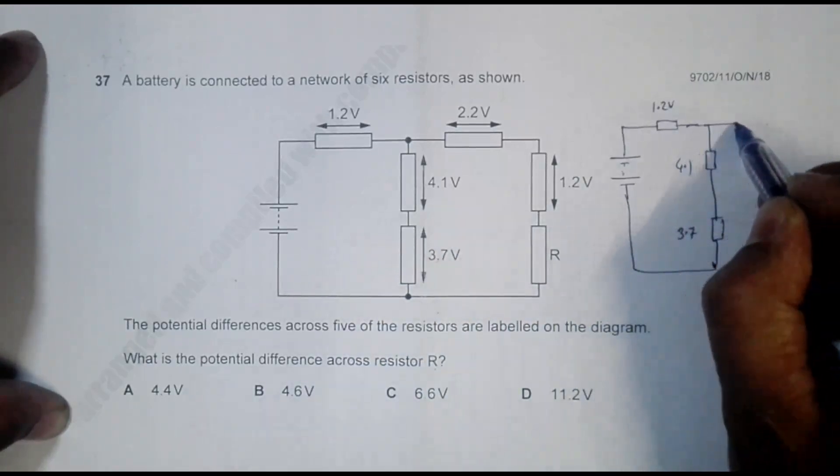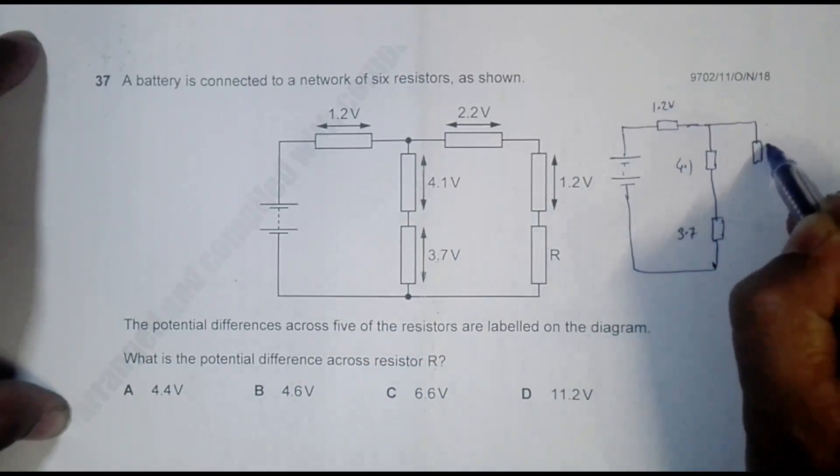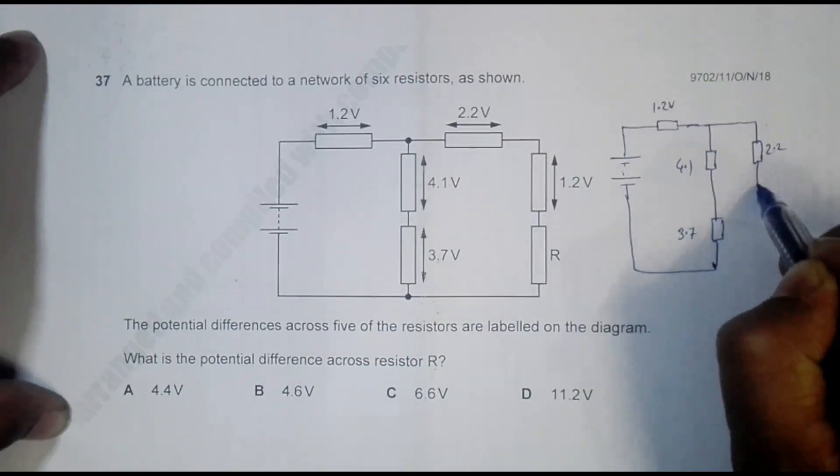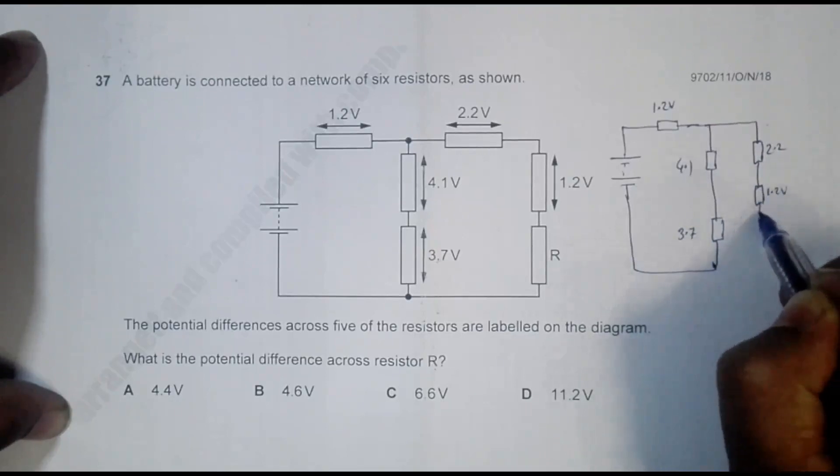This is the first resistor with 2.2 volt, this is the second resistor with 1.2 volt, and this is the third resistor with the voltage which has to be found.